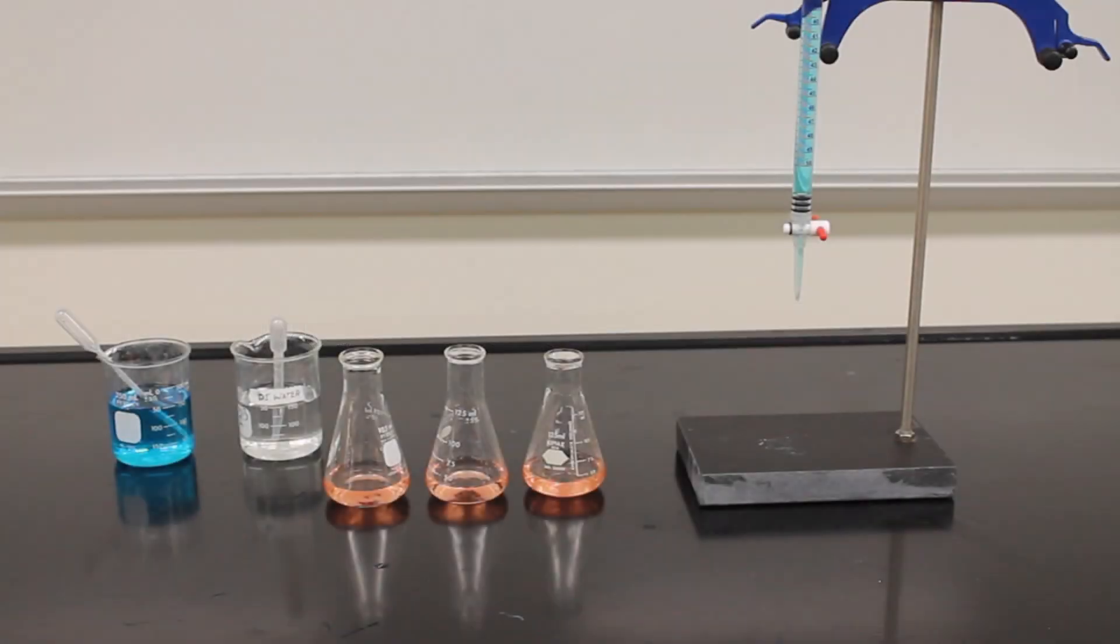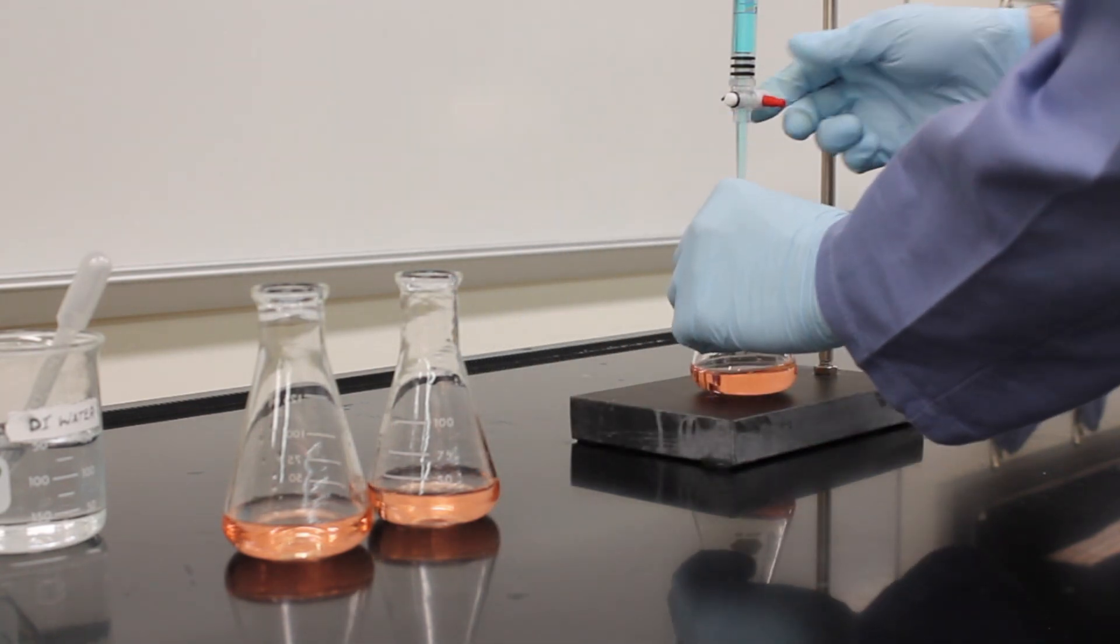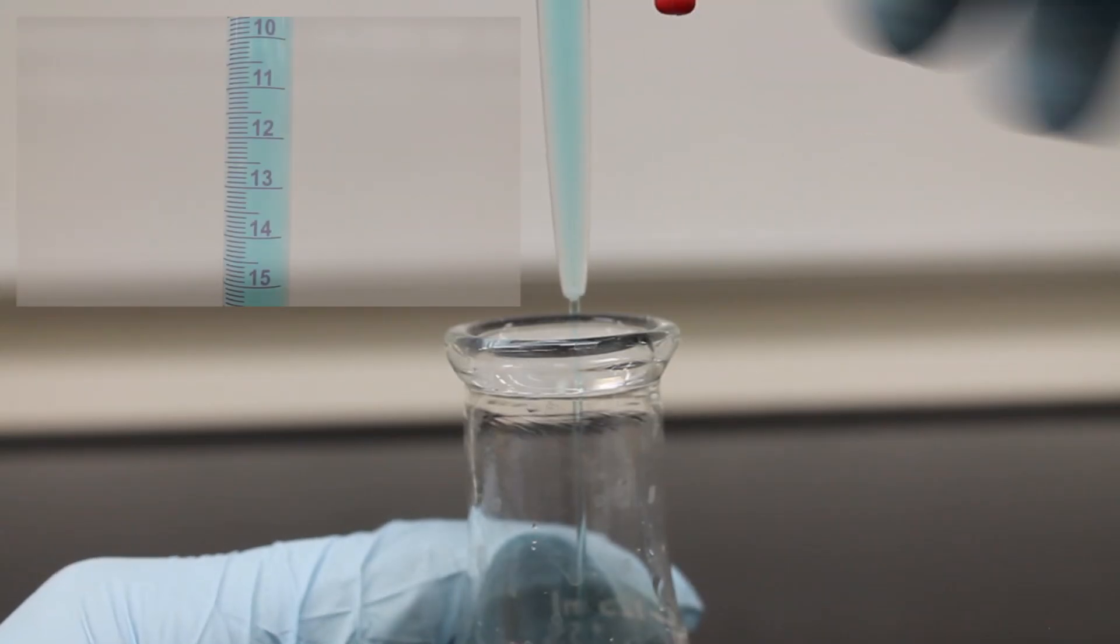Cleaning the burette is really the complicated part. Measuring liquids with the burette is the easy part. Place the container you wish to deliver your liquid to underneath the burette. Open the stopcock and allow the liquid to run.